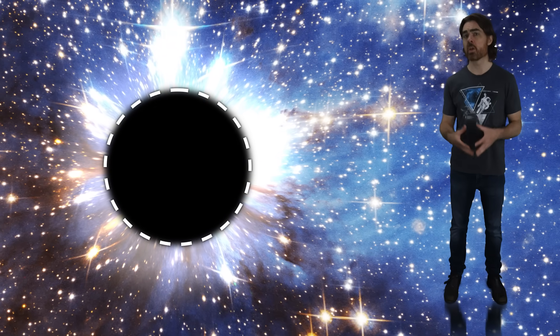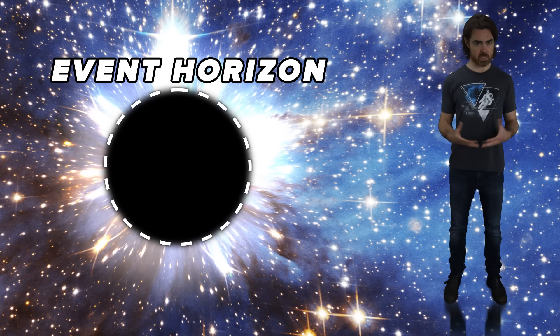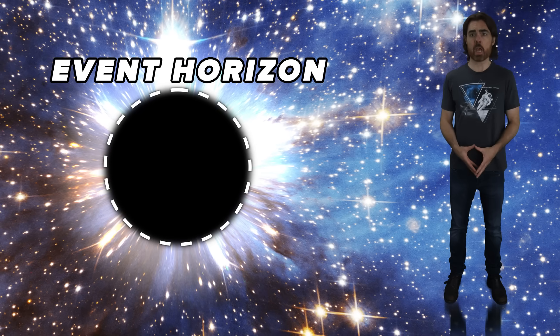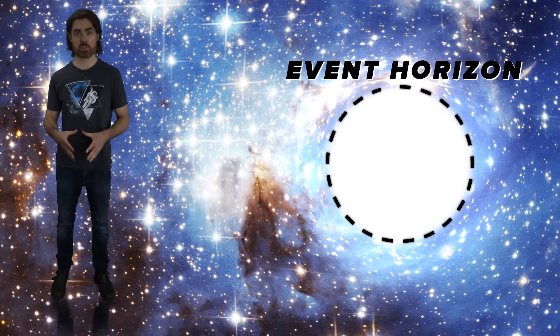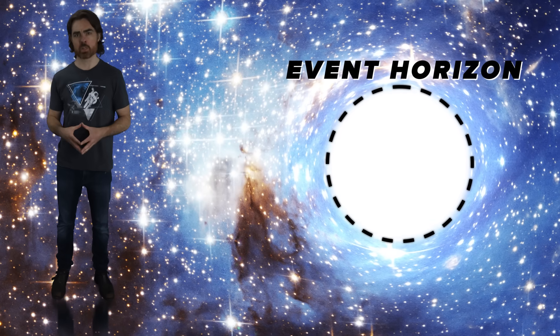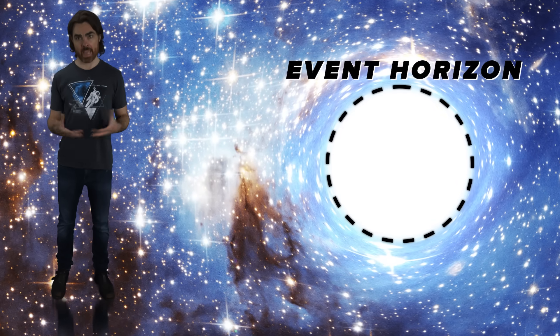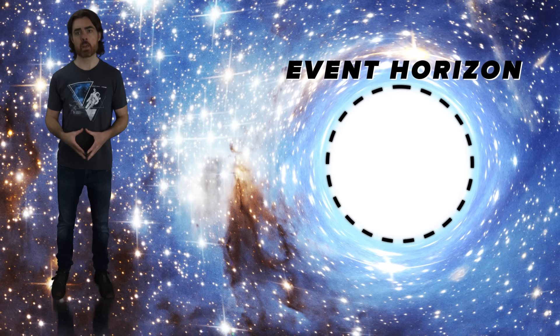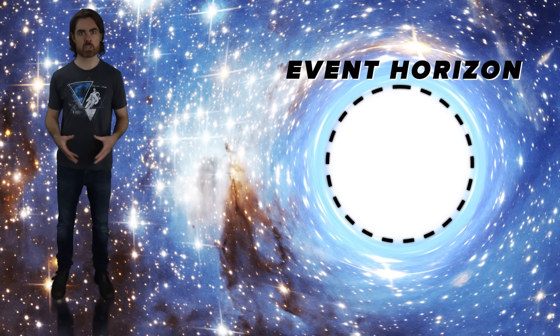A black hole is defined as a region of inward-flowing space time with a one-way boundary called the event horizon, from inside of which nothing can ever escape. That makes a white hole a region of outward-flowing space time. It also has an event horizon, but that horizon prohibits entry, not exit. Nothing outside a white hole can ever enter, and everything inside must be ejected.